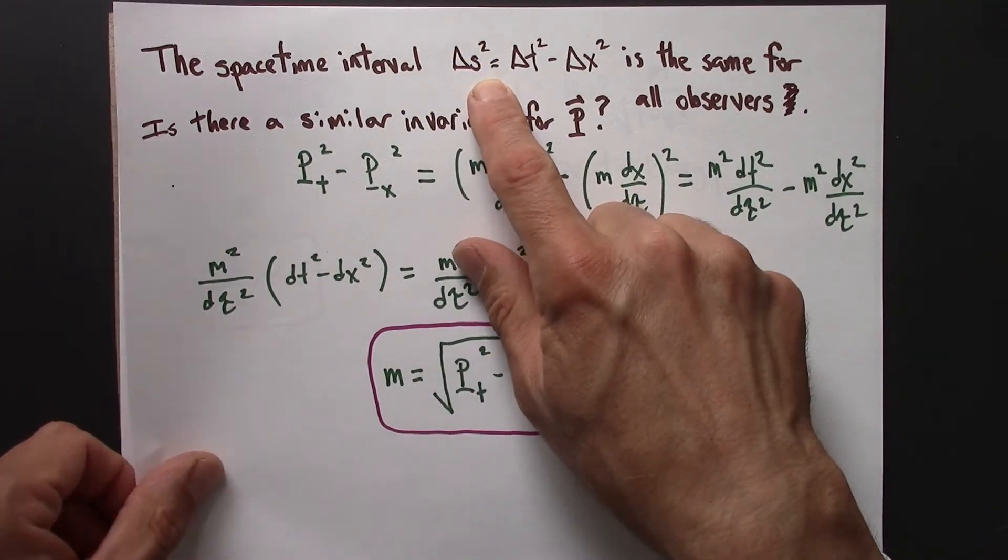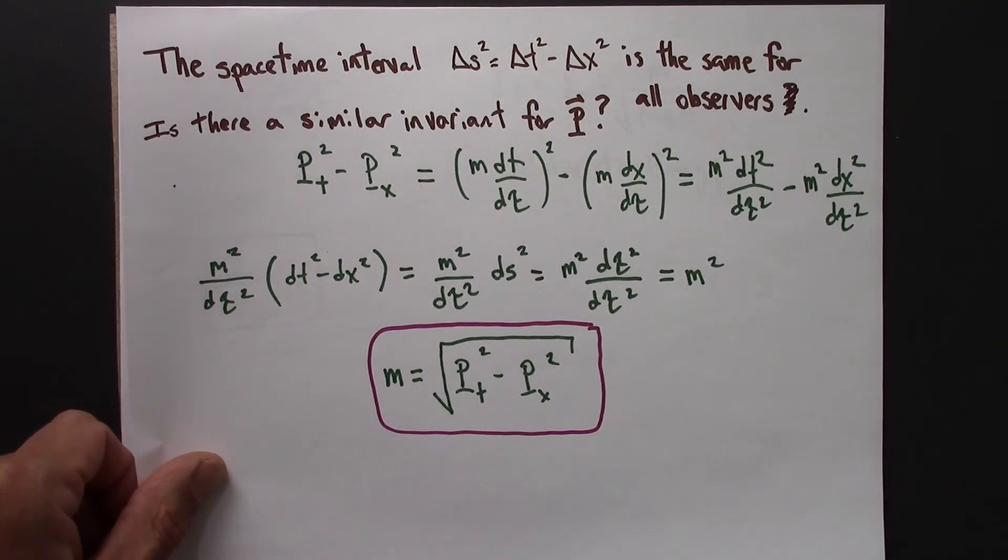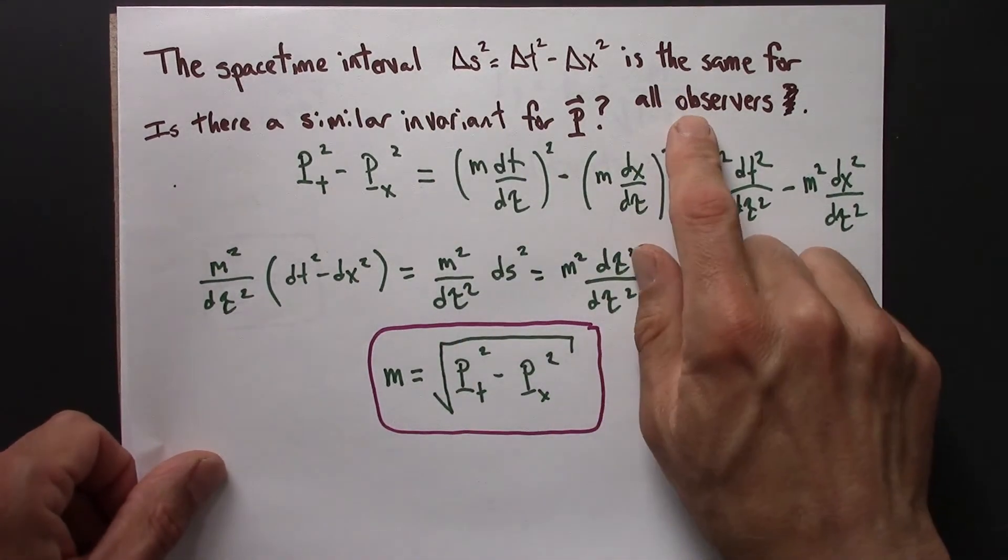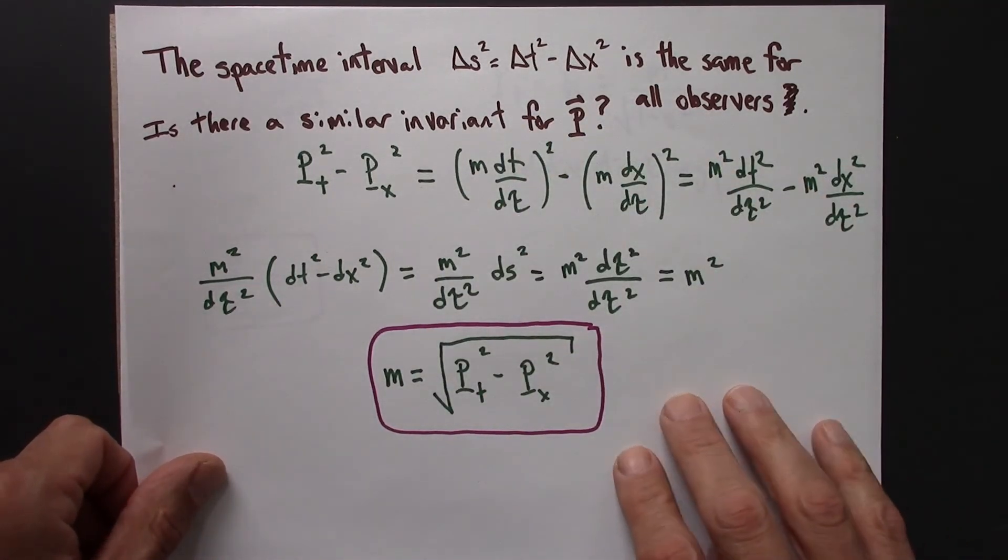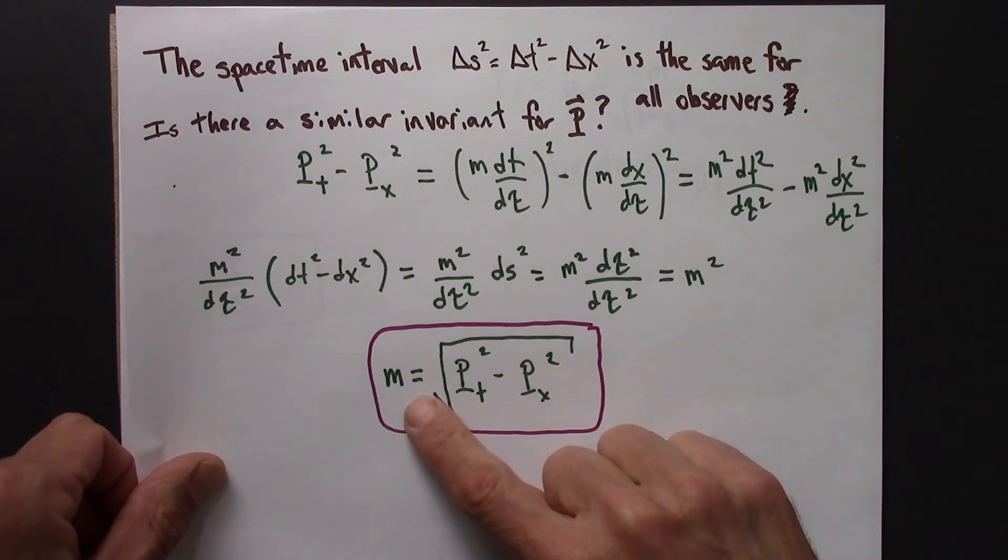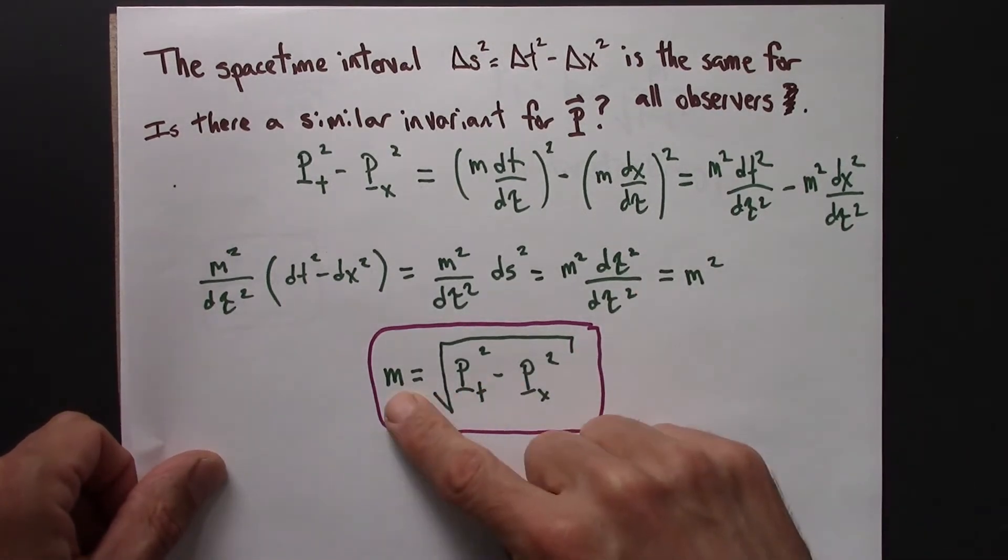There's this spacetime interval that's this nice, deeply physical quantity that's the same for all observers. So we said, is there something like that for momentum? Yes there is. It's this, and that turns out to be equal to the mass of the object.